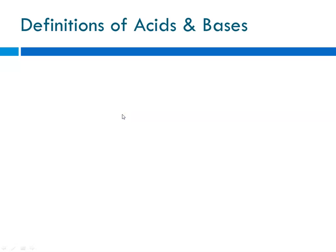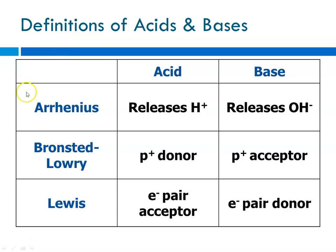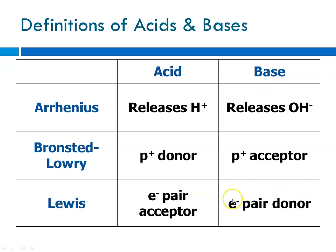A summary of the definitions of acids and bases: our three definitions are Arrhenius, Bronsted-Lowry, and Lewis. The Arrhenius definition defines an acid as anything that releases H-plus in aqueous solution, and a base as anything that releases hydroxide ion in aqueous solution. The Bronsted-Lowry definition: an acid is a proton donor, and a base is a proton acceptor. The Lewis definition: an acid is an electron pair acceptor, which means it could be a positive ion, and a base is an electron pair donor, which means it could be an anion or negative ion. For today, this is Ms. Augustine signing off.